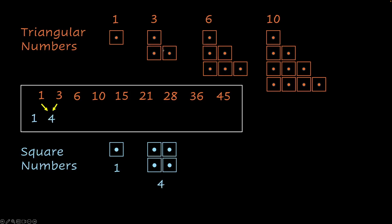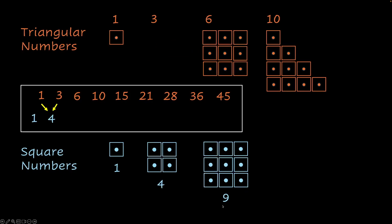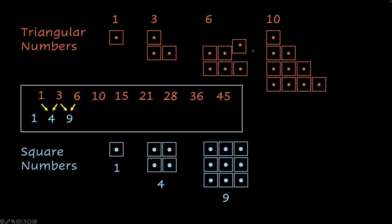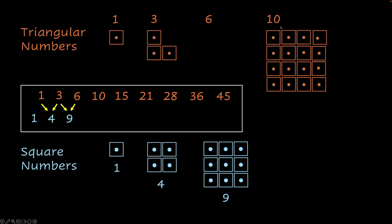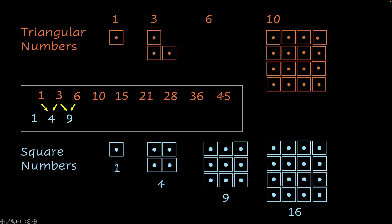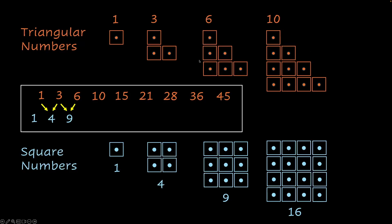Let's put them back and try combining the next pair. We've done this slotting before, but let's do it again. We put this over here and these over here, so we get 6 plus 3, which gives you 9. So 9 is the next square number — 6 plus 3 equals 9. Let's put them back. Now let's move ahead and combine these: we get 10 plus 6, which is 16. 16 is the next square number.